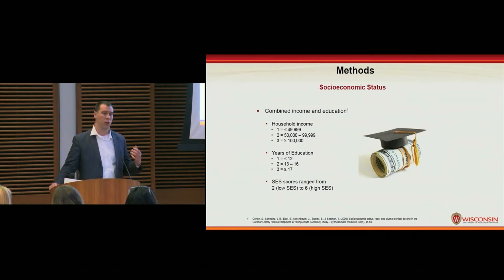An example of an individual scoring a 2 would be having a household income less than $50,000 a year and less than or equal to 12 years of formal education, whereas someone with a score of 6 would have a household income greater than $100,000 and greater than or equal to 17 years of formal education.